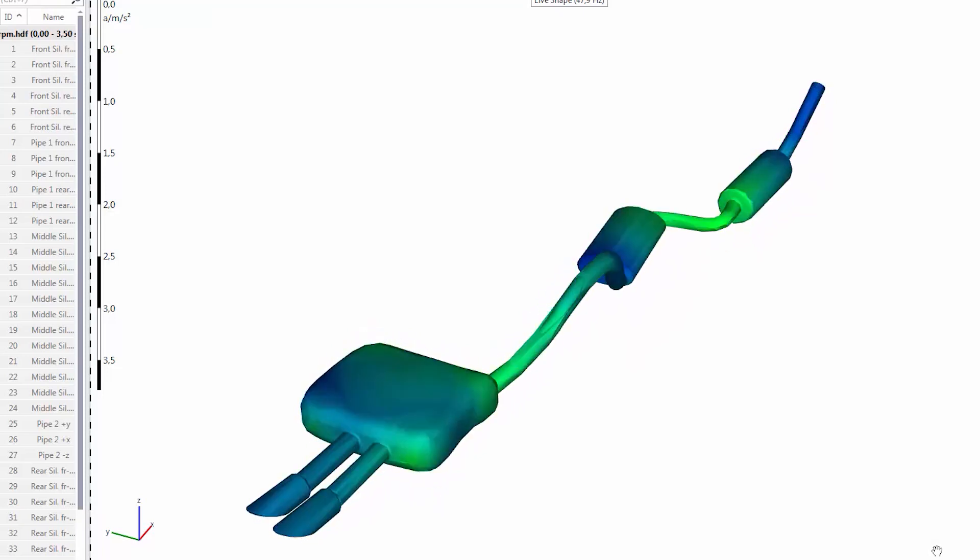You have probably seen these Operating Deflection Shape ODS analyses before. There you see your test object slowly animated at different frequencies and you can see exactly what deflection it has, what kind of operation modes are generated.